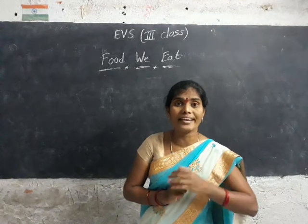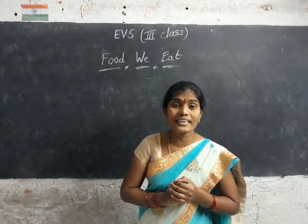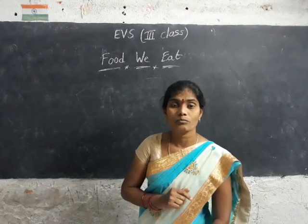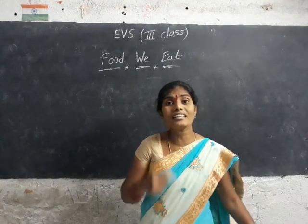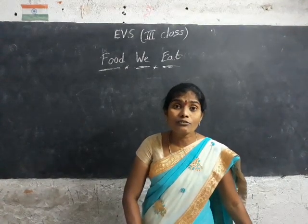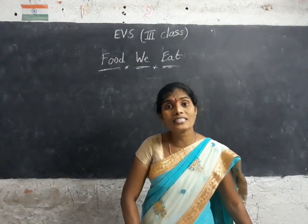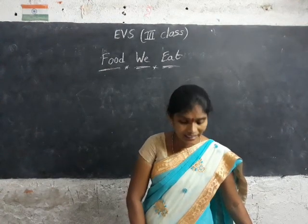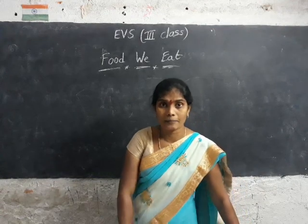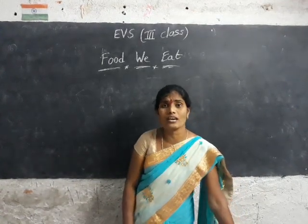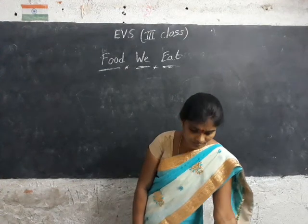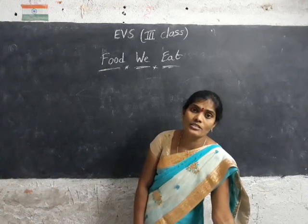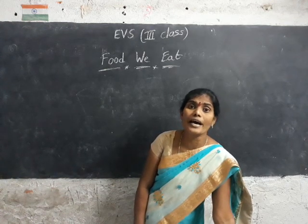Some foods are fried in oil, like bajji and puri — they are fried in oil. All food items are not cooked in the same way. Some are fried, some are boiled. What is boiled? Food items like ukma, rice, dal, and vegetables are boiled.